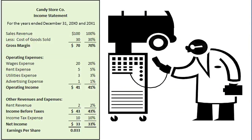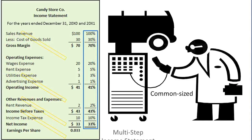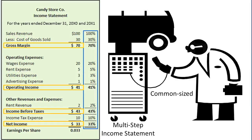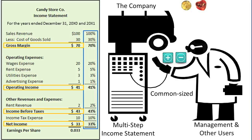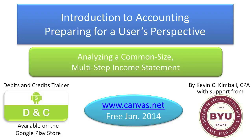I do hope you get the point that a common-size, multi-step income statement can be very effective in identifying unusually positive and negative relationships of expenses to revenues, as compared to the company in the past or as compared to its competitors now. Once areas of concern have been identified and the causes have been understood, management and other users can use what they learned to make plans for improvement. Sometimes management will realize that the best plan for the future will be to not fix what isn't broken. Hopefully, this topic on analyzing a common-size, multi-step income statement made sense to you. I wish you all the best on the quiz.